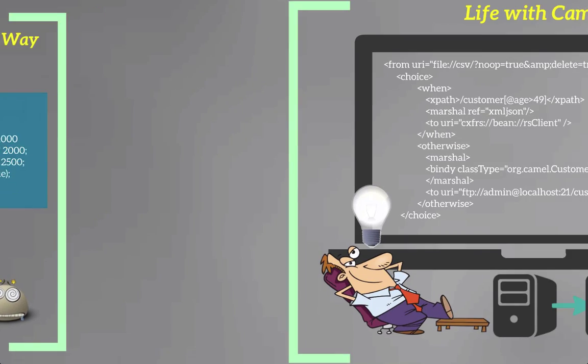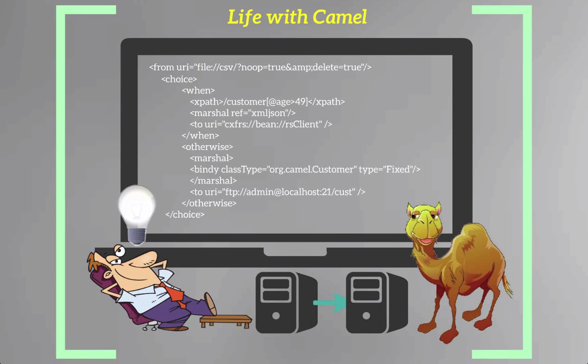But with Camel, you could define routings and mediation rules in a variety of DSLs — domain-specific languages. The one I'm using right now is Blueprint XML, and this is actual working code. But you don't have to use Blueprint — you have a choice of doing it in Java or Spring XML, whatever you would like to use. With Camel, it spares you from duplicating the code over and over again and lets you focus on the most important thing, which is your business logic.